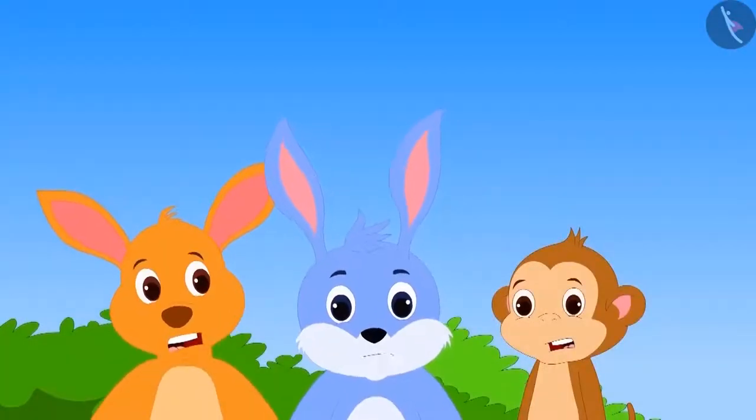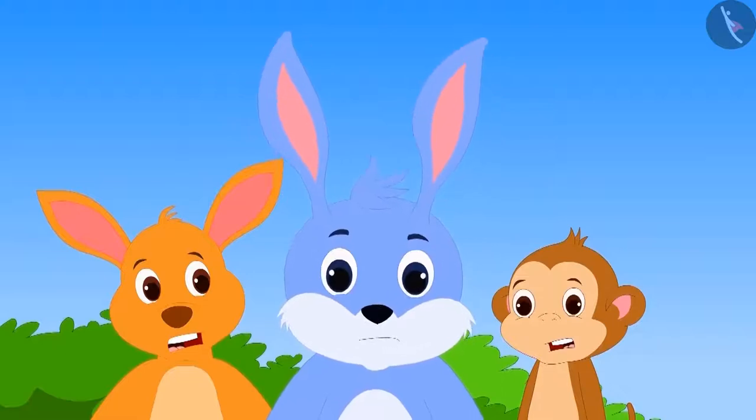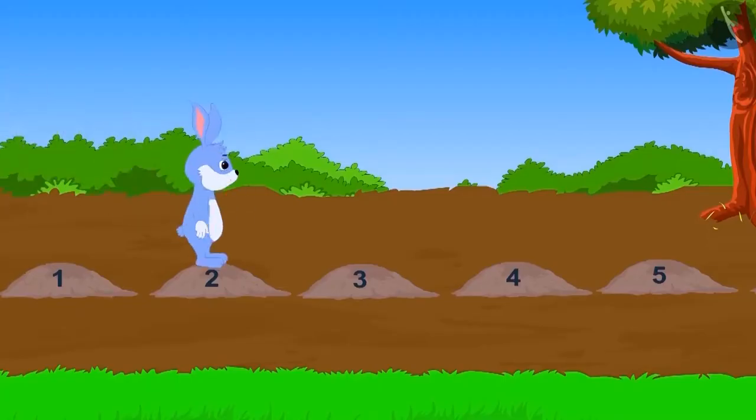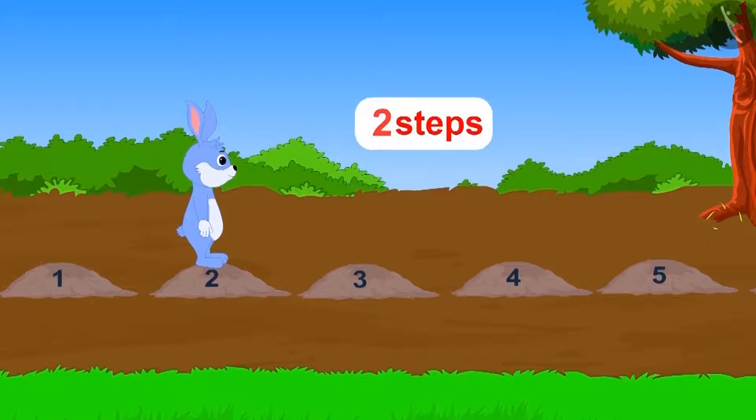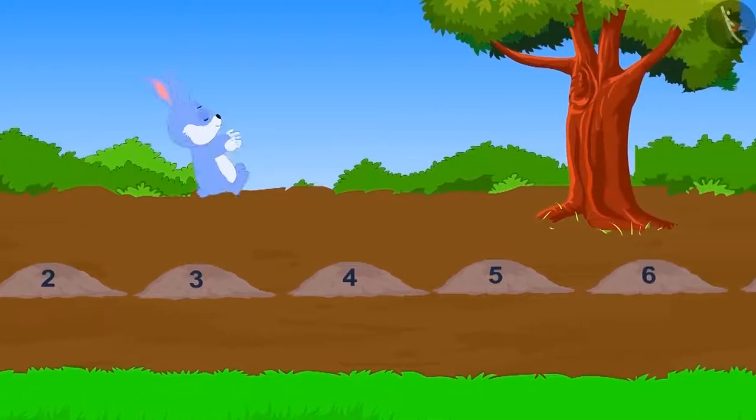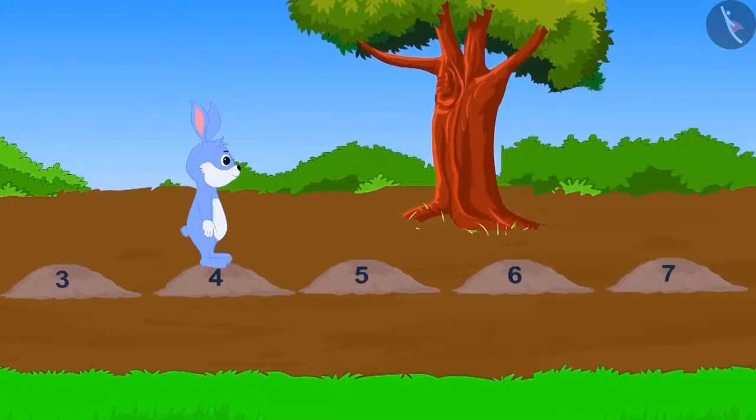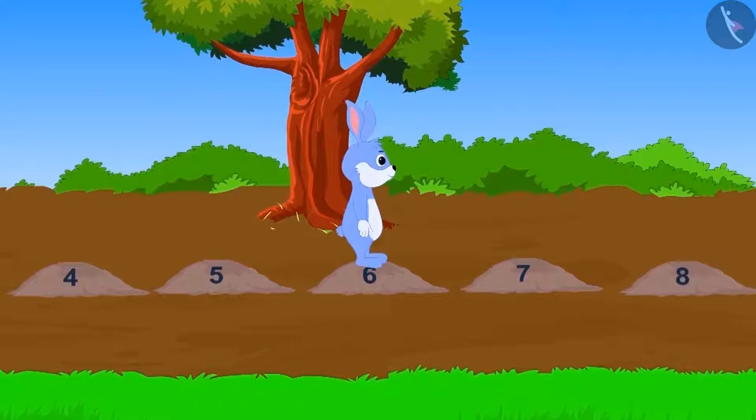First, bunny tried to cross the swamp. He jumped two steps in one jump and reached the second stone. Then he took another jump and reached which stone? On the fourth stone. In the third jump, bunny will reach on which stone two steps ahead? On sixth stone.